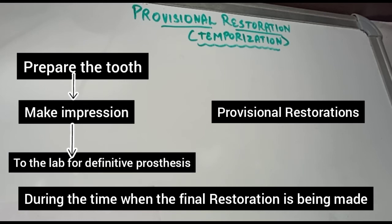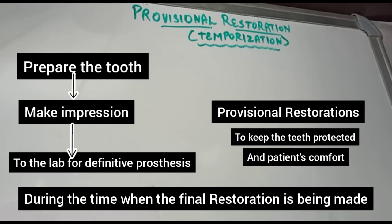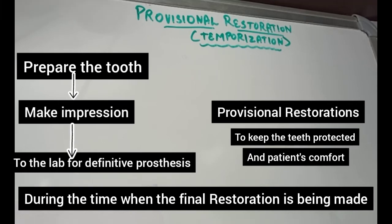During the time between preparation of the tooth and placement of the definitive restoration, the tooth is protected by a provisional restoration. This keeps the teeth protected and at the same time ensures patient comfort. Now we understand why we need to give a provisional restoration, so let's see the ideal requirements.